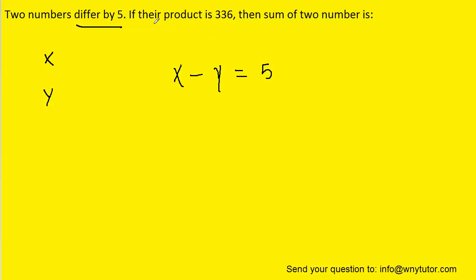We are also told that their product is 336, and of course the product indicates multiplication. So we can say that x multiplied by y is equal to 336.